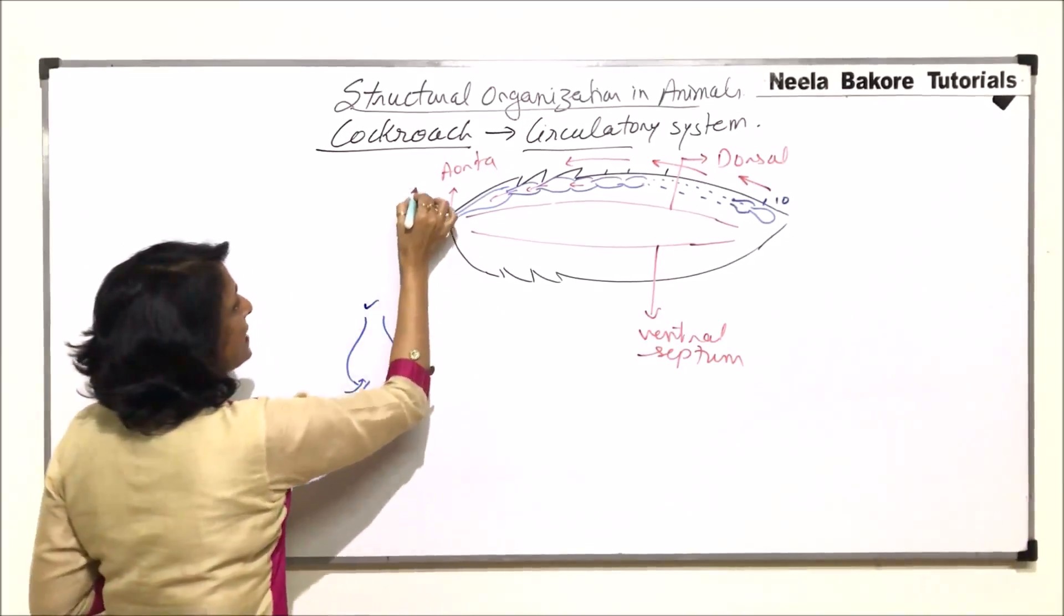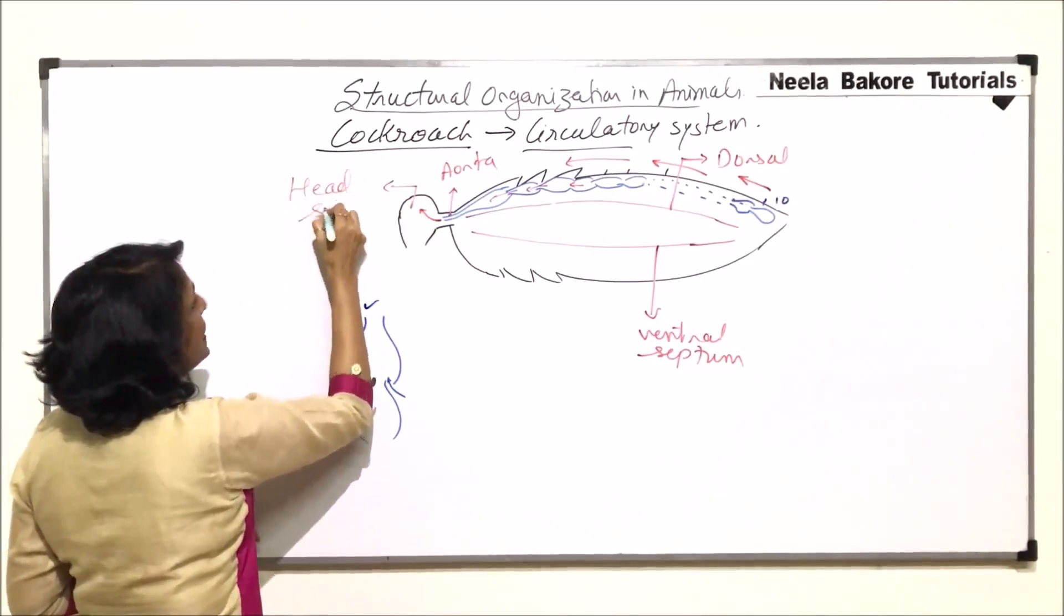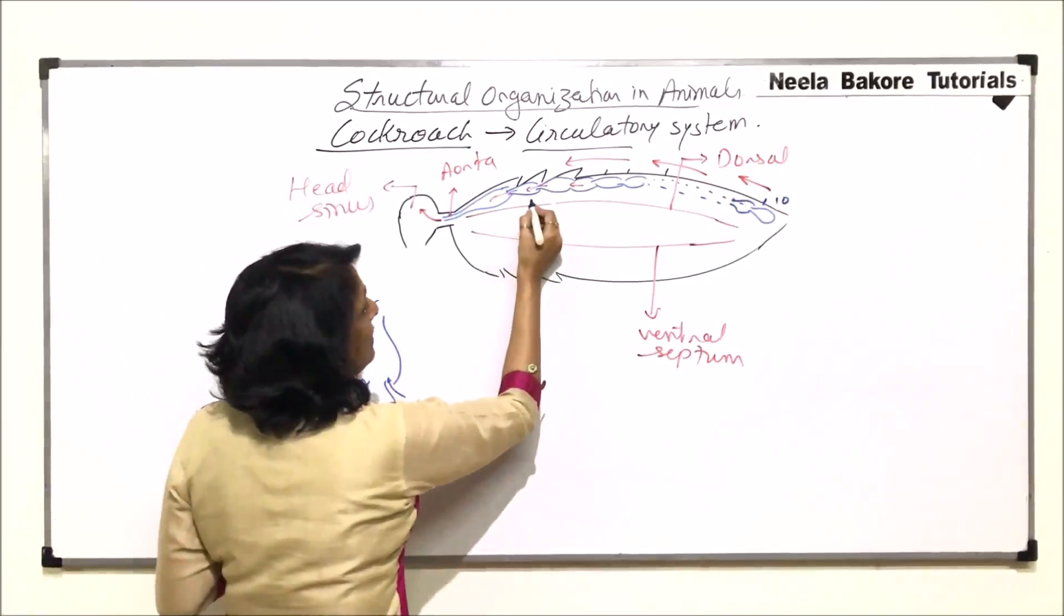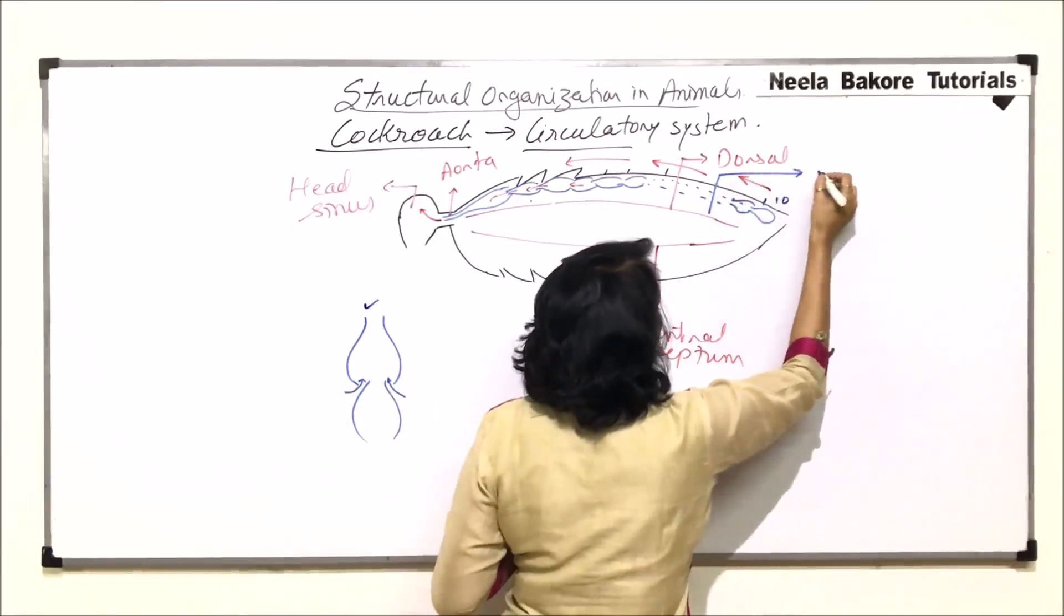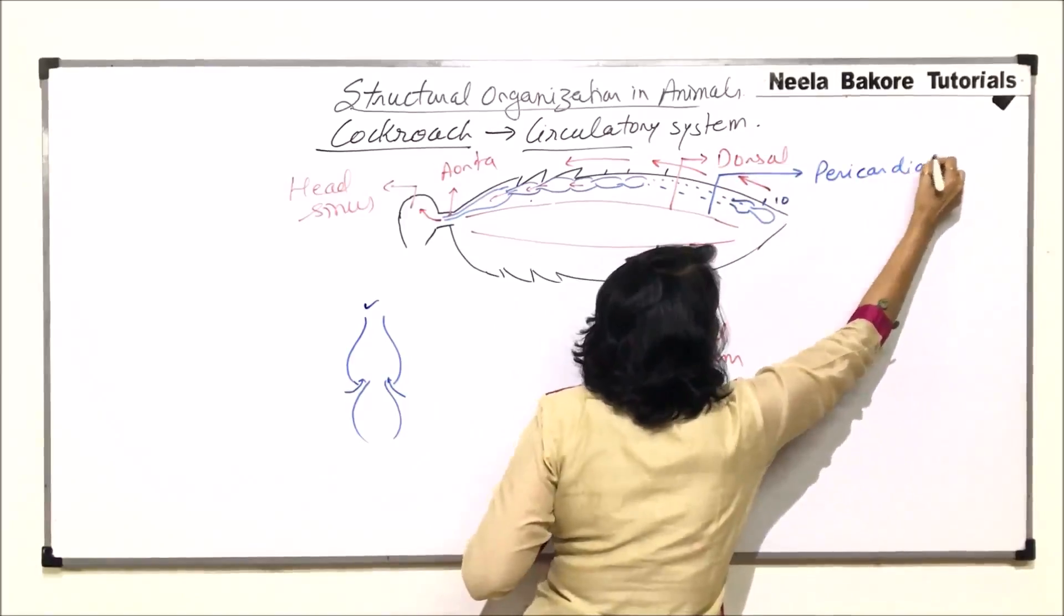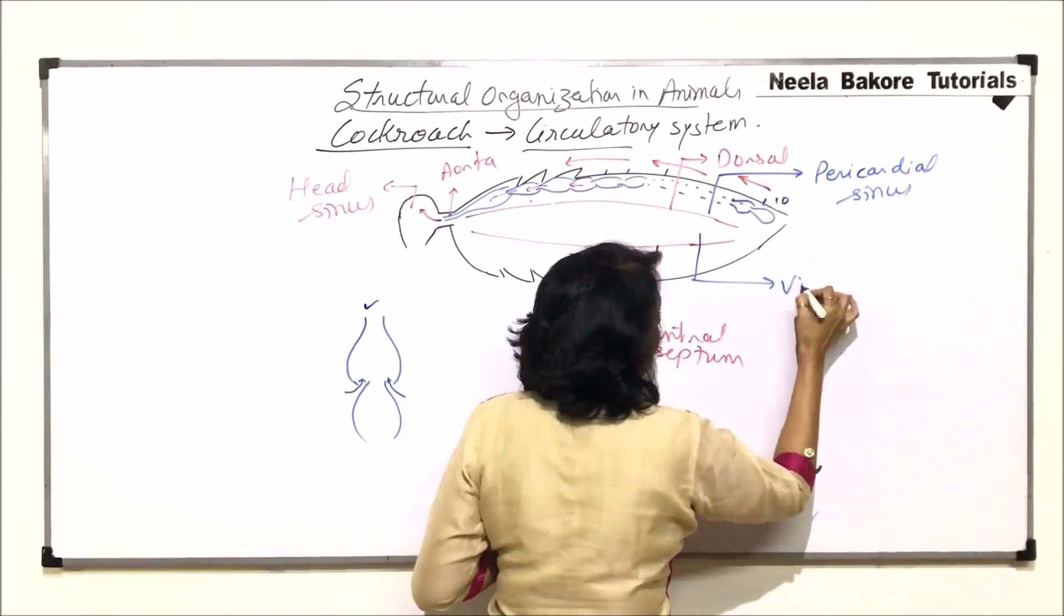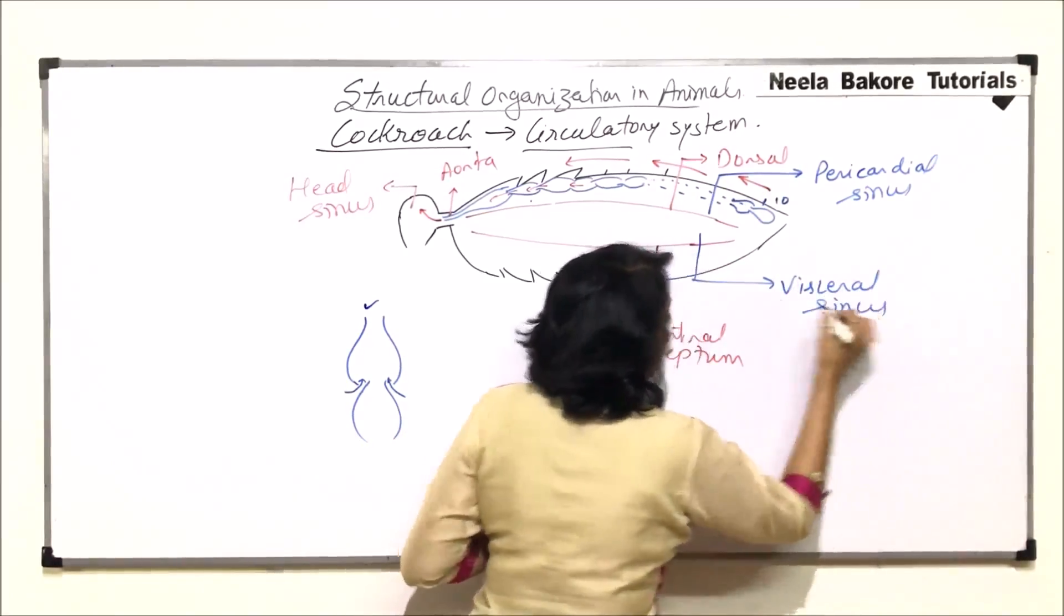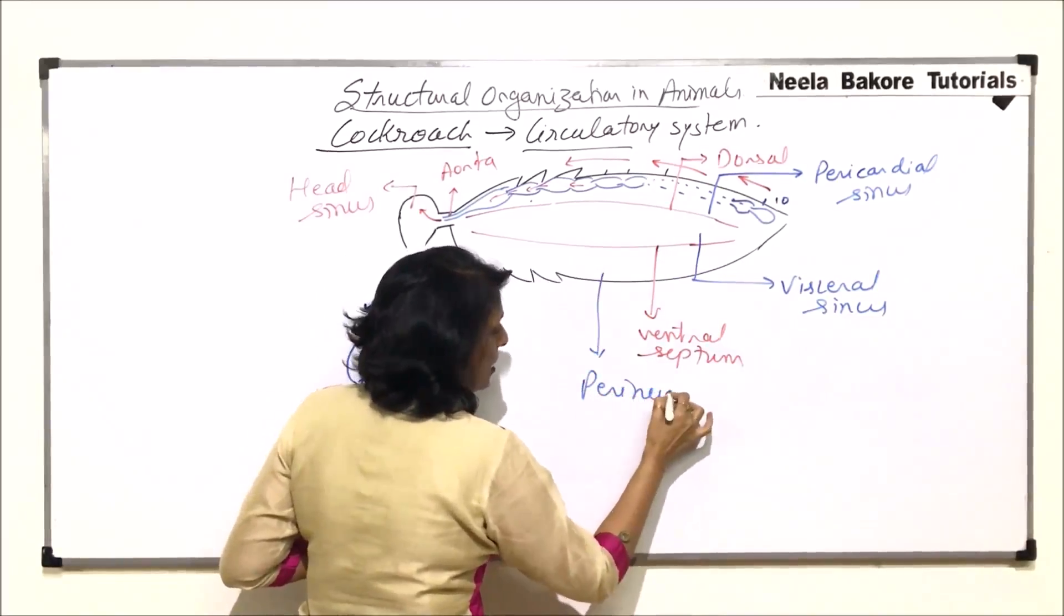That means here there is a cavity and we call it head sinus. The body is divided into sinuses. This cavity where the heart is located, we have already labeled it earlier. This is the pericardial sinus. The middle one is visceral sinus. The ventral one is perineural sinus.